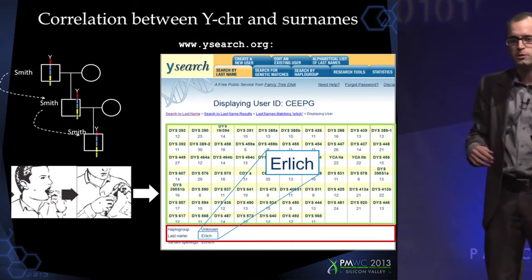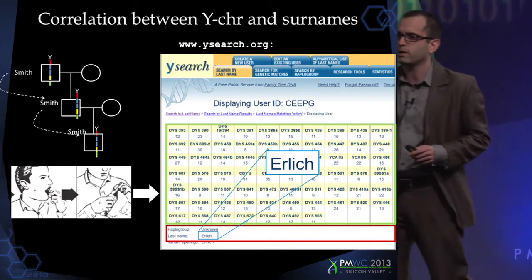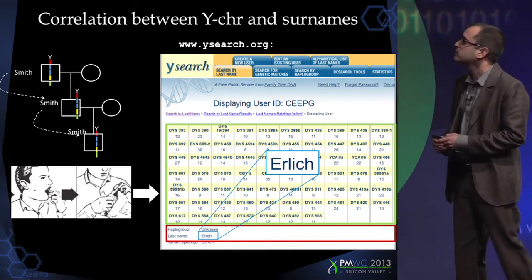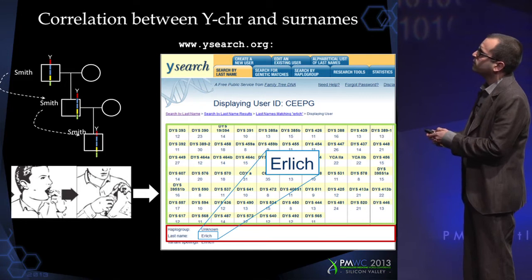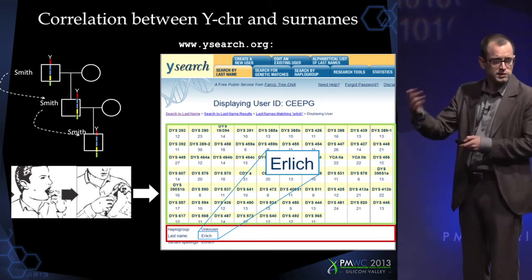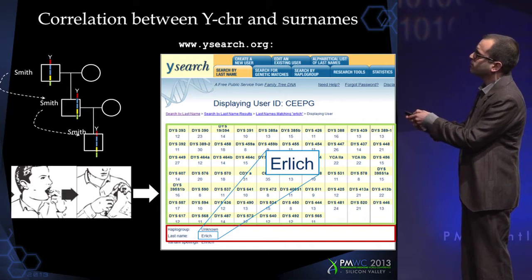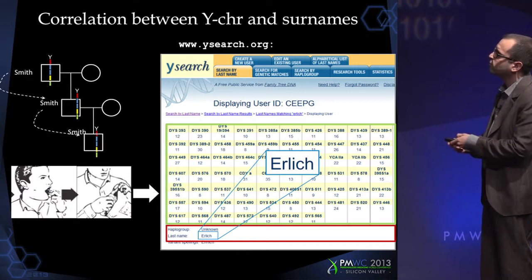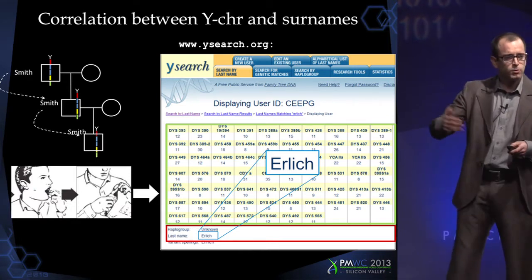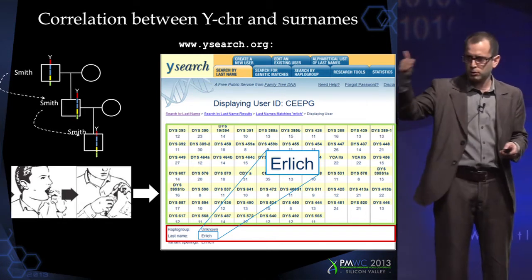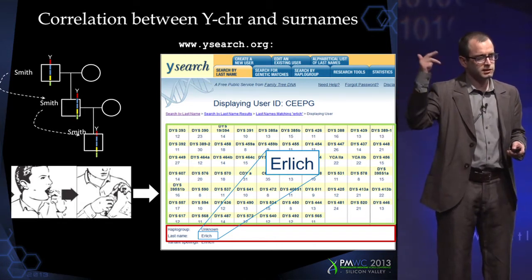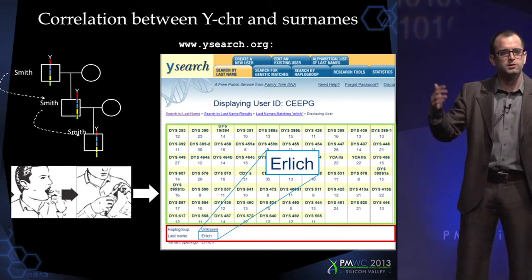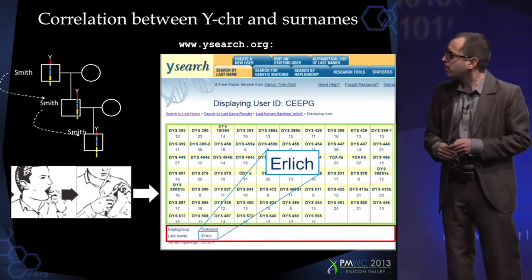Let's talk about security in whole genome sequencing data. About a decade ago, it was recognized that there is a correlation between the Y chromosome and surname. For instance, here we have the Smith family — a son will get his Y chromosome from his father, and in most Western societies, he will also get his surname. If this son gets married, he will also transmit his Y chromosome and his surname.